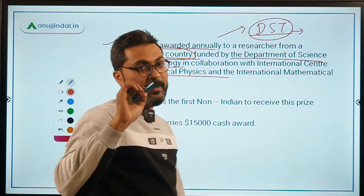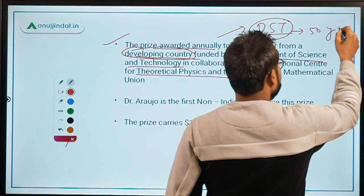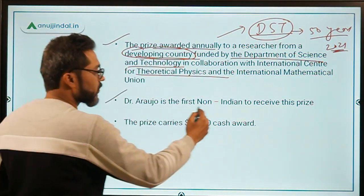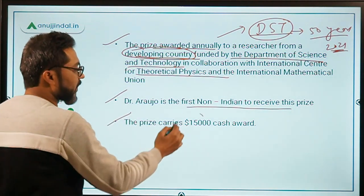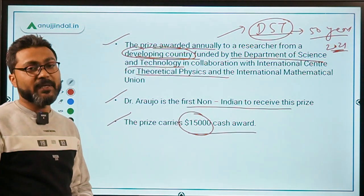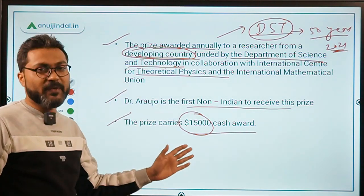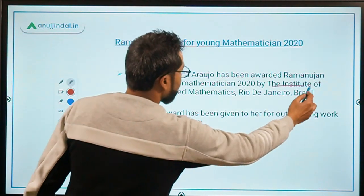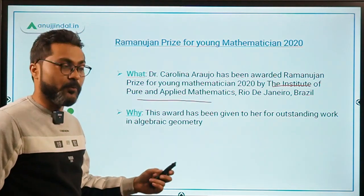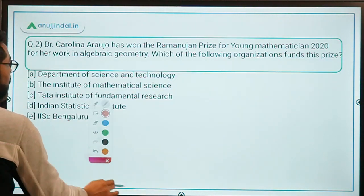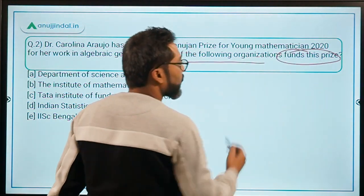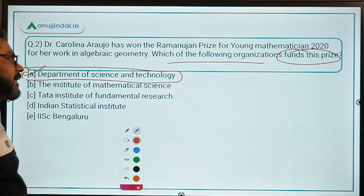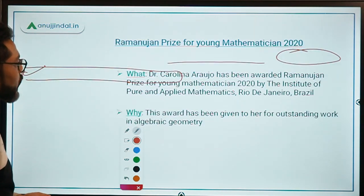The Department of Science and Technology is completing 50 years in 2021. She is the first non-Indian to receive this prize, and the prize carries a $15,000 cash award. This prize is funded by the Department of Science and Technology, Government of India, and is given by the Institute of Pure and Applied Mathematics located in Rio. The correct answer is option 8 — Department of Science and Technology, under the Ministry of Science and Technology.